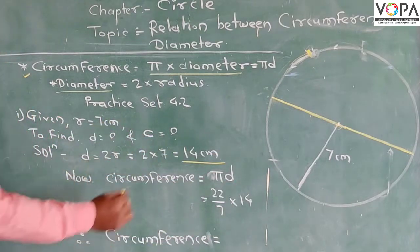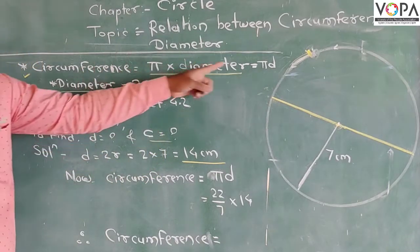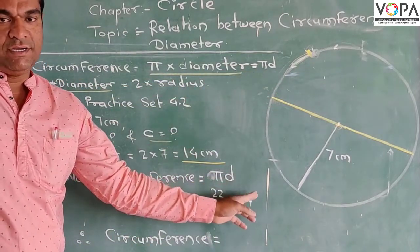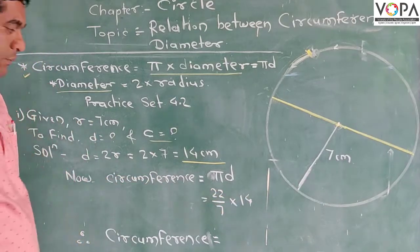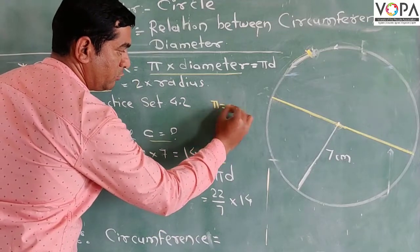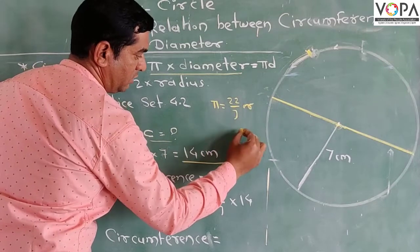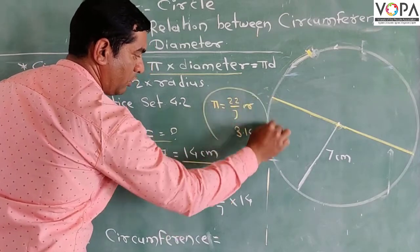Now we want to find the circumference. The formula is πD. Circumference equals π into D. The universal values of π are: 22 upon 7, or 3.14. These are the two values of π.